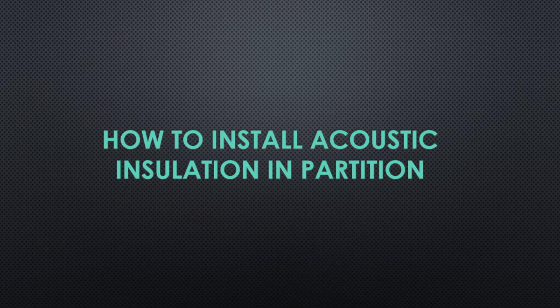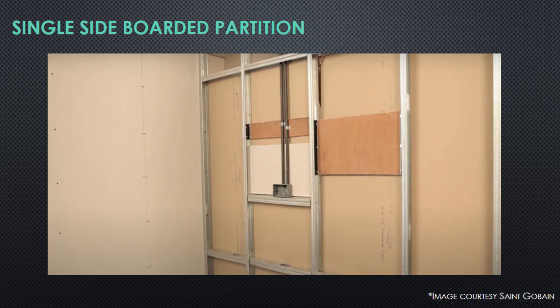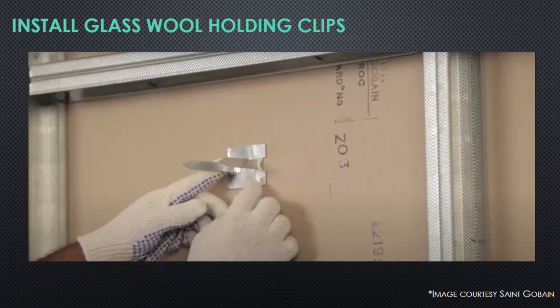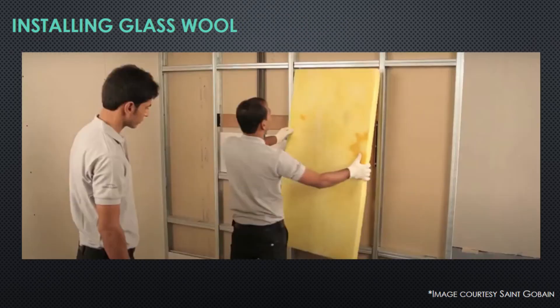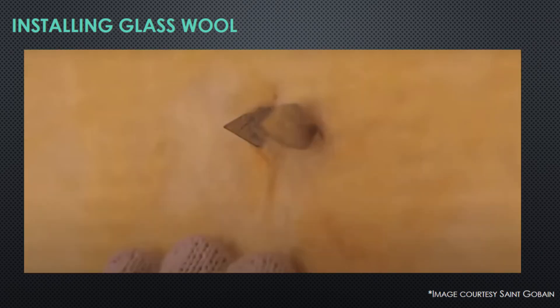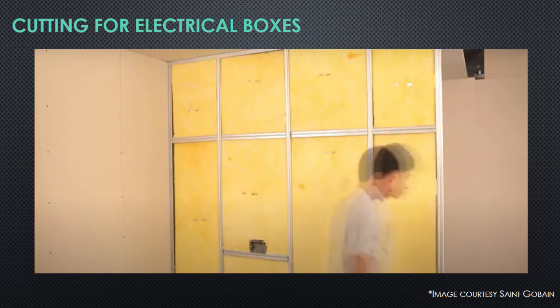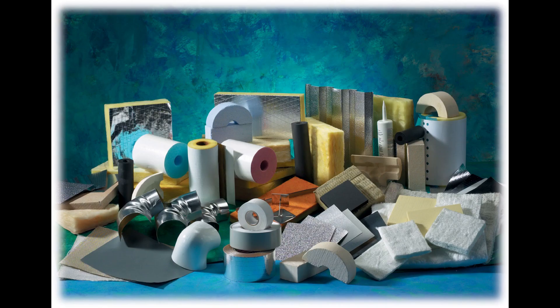Let's understand the most common glass wool acoustic insulation installation process. Once you have the single-side boarded partition ready — including placement of all partition conduits, boxes, and other fittings — you can start installing the glass wool. It is important to complete all partition fittings before installing glass wool, as installing it first will damage the insulation. First, install the glass wool holding clips, then fold the clips to receive the glass wool batt. Cut the glass wool batt to the partition size, place it on the partition, and the holding clip will keep it in place. Fold the clip straight so it is flush, then close the partition with gypsum board and you are done.